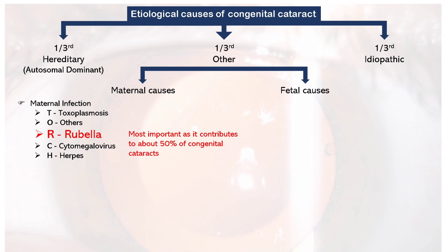Next in maternal causes is maternal malnutrition. From a cataract perspective, important vitamins are B, C, and E, which we have already discussed in lens physiology — how these vitamins play the role of antioxidants to prevent degeneration or opacification of the lens. Next is maternal drug ingestion. Drugs noted for causing cataract in the child if taken by the mother during pregnancy are steroids and thalidomide.